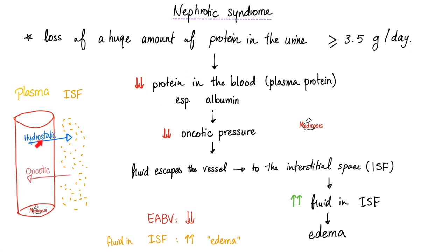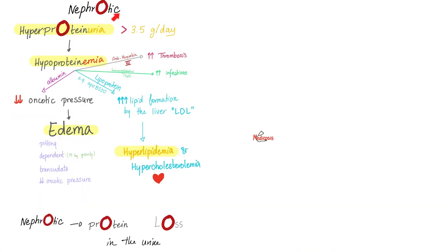When you lose the proteins, you get hypoproteinemia. You decrease your oncotic pressure. Fluid starts leaving your capillaries, ending up in the interstitial fluid, causing edema. So in nephrotic syndrome, you have high protein in the urine but low protein in the blood. As a result, you get edema. Nephrotic syndrome: high protein in my urea, low protein in my emia, edema and hyperlipidemia.